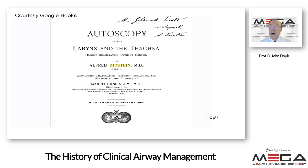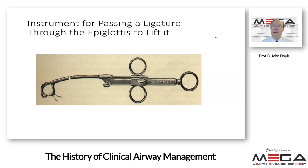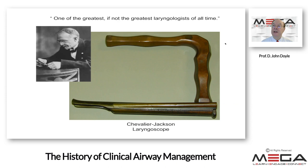Kirstein's book 'Autoscopy of the Larynx and the Trachea: Direct Examination Without a Mirror,' from 1897, is available for free download from Google Books. It comes with a signature from the author himself. An interesting instrument from that time was a device for passing a ligature through the epiglottis to lift it out of the way — whereas today we advance the direct laryngoscope into the vallecula to displace the epiglottis, back then one could literally lift it out of the way with a ligature for certain forms of clinical airway management.